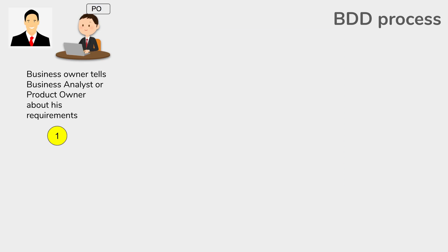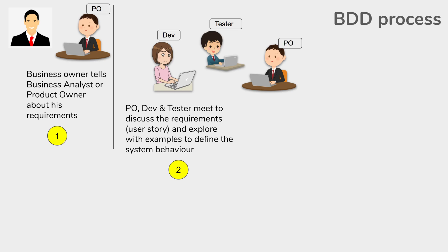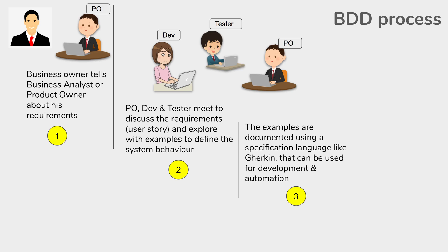Now let us see how a BDD process looks like. It starts with the same stage where a business owner or the stakeholders tell the business analyst or the product owner about their requirements, needs, features, and changes they need in the application. After this, the product owner does a meeting with representatives of the dev team and the QA team. This is called the three amigos meeting. Here they discuss the requirements, the user stories, and the examples that will define the system behavior.